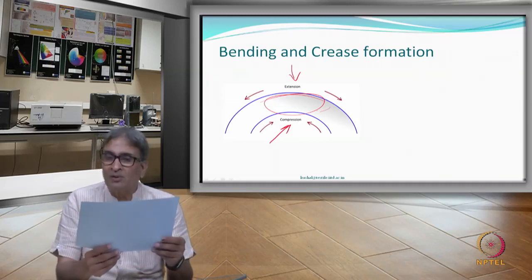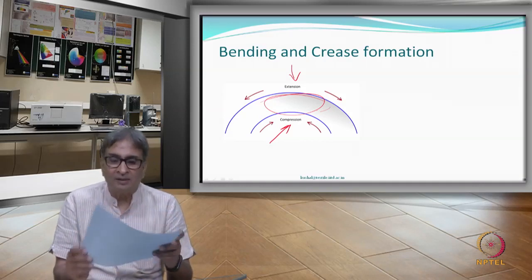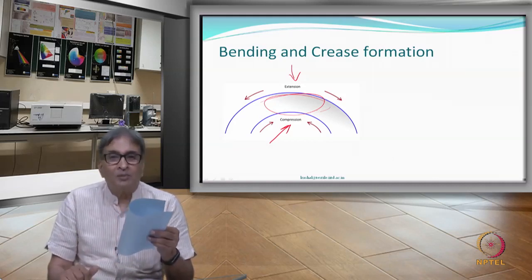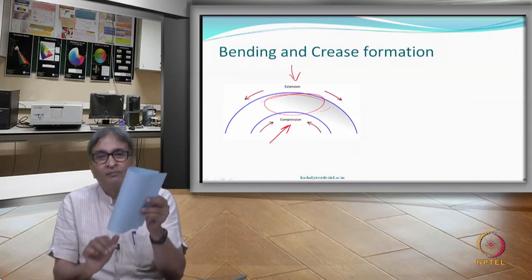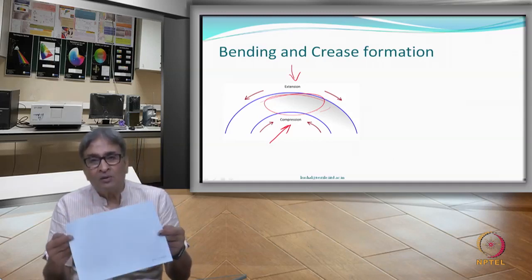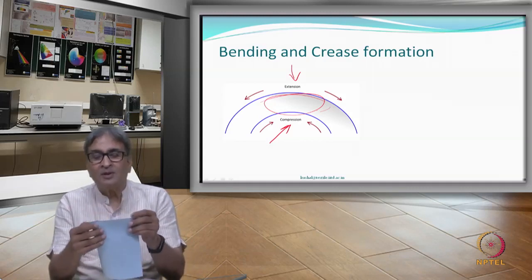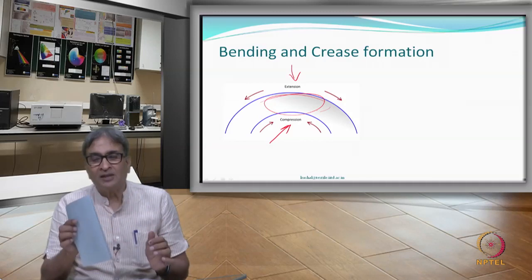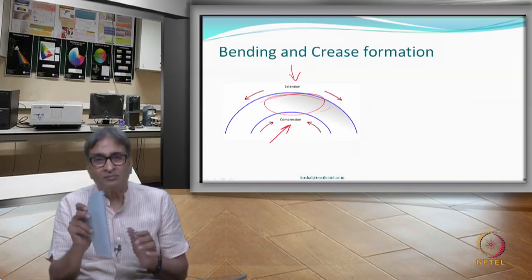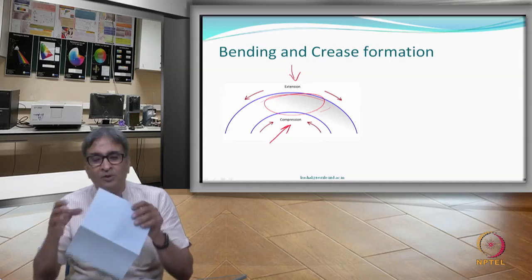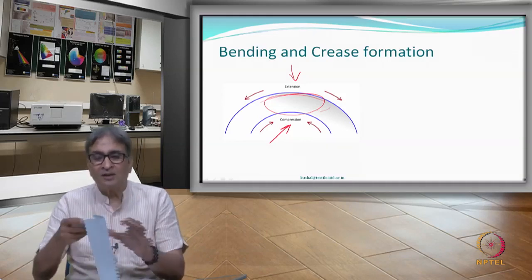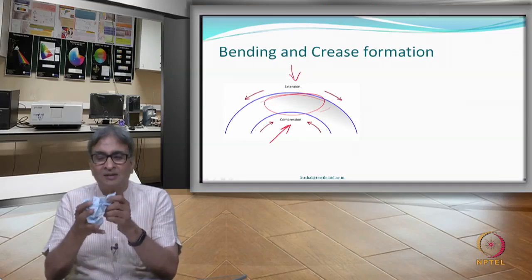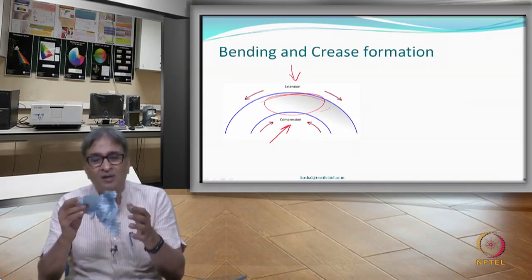Whenever we do something — sit down, for example — some crease can form. What is important is whether it comes back. It is coming back: no creases. But if I make the bend very sharp, it does not recover — that crease has been formed. You do it further, another crease is formed. Now it is not recovering. So why does it crease and why does it recover?